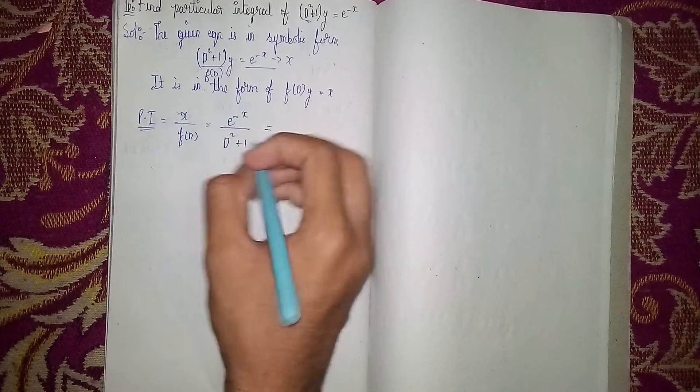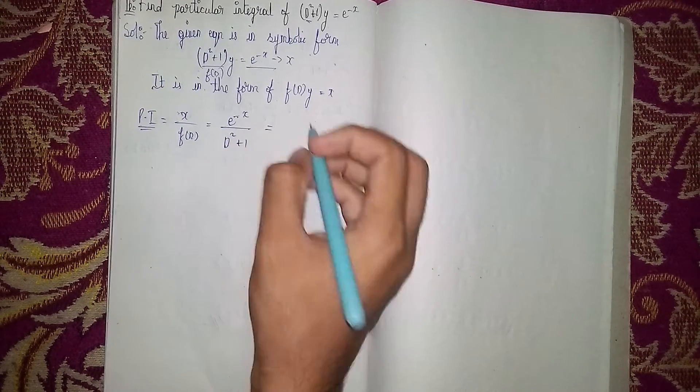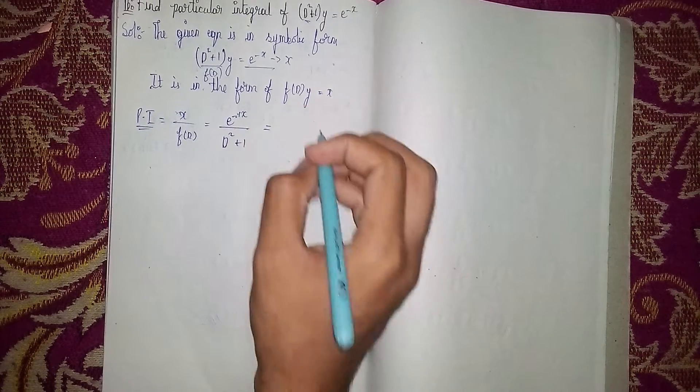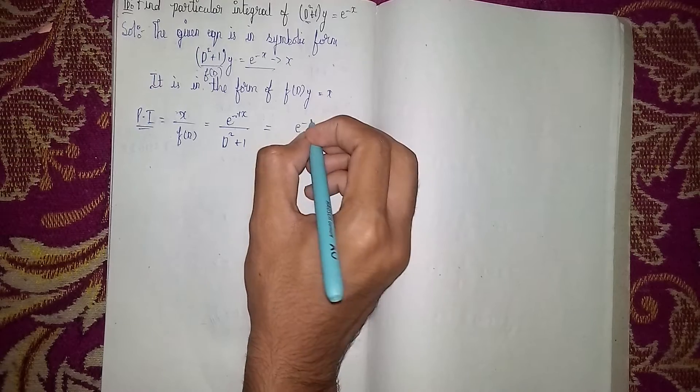In the next step, instead of D, we substitute -1. So we have (-1)² + 1 = 1 + 1. We get e^(-x)/((-1)² + 1).